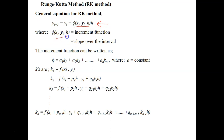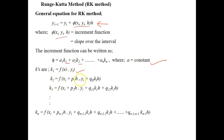This increment function can actually be written as A1·k1 plus A2·k2 plus so on, where A equals a constant. k1 and k2 can be represented with the slope of the points: k1 at (xi, yi), and k2 at point (xi + p1·h, yi + q11·k1·h), and so on. We're going to look at how to determine all these values of A1, A2, p1, and q11.